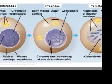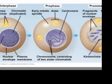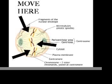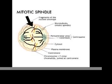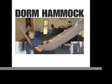Chromatin now condensed to chromosomes. After rays start to appear, chromosomes move here. Centrioles move to opposite poles, but in plant cells there are no centrioles. The mitotic spindle begins to form.